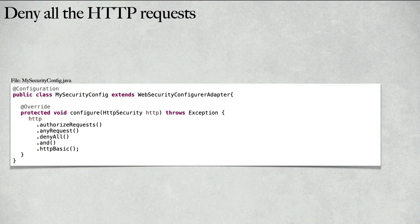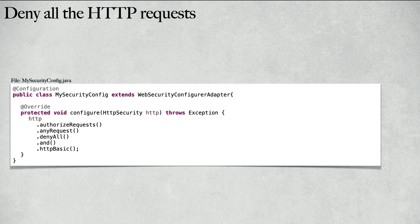Inside our Spring Security configuration file, we have overridden the configure method, which accepts the HttpSecurity as a parameter. Inside this, we call the denyAll() method. We call authorizeRequests().anyRequest().denyAll(), and then we call httpBasic(). This way, any request that comes via HTTP will be denied.